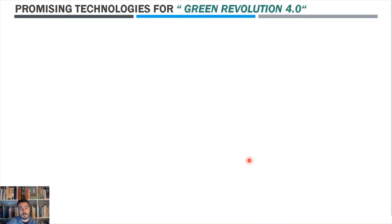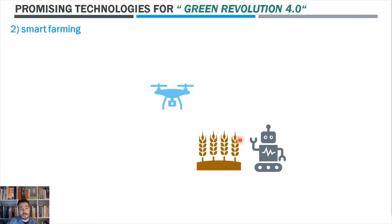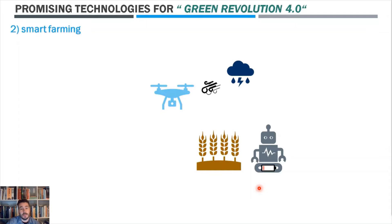The second technology is smart farming — like drones and autonomous robots for soil and field analysis, planting, crop spraying and monitoring, irrigation, and health assessment. However, disadvantages include still low flight time and limited battery life, little area coverage, difficulty controlling them in extreme weather conditions, and a lack of current agrochemicals suitable for spraying with these technologies.